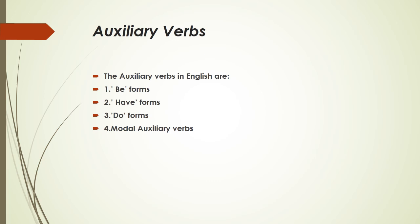In English, we have the following auxiliary verbs: be forms, have forms, do forms, and modal auxiliary verbs.